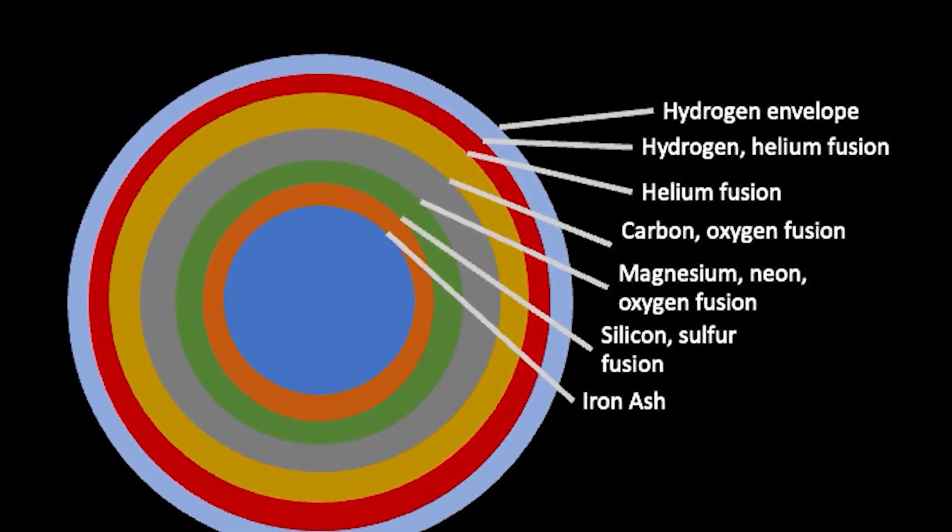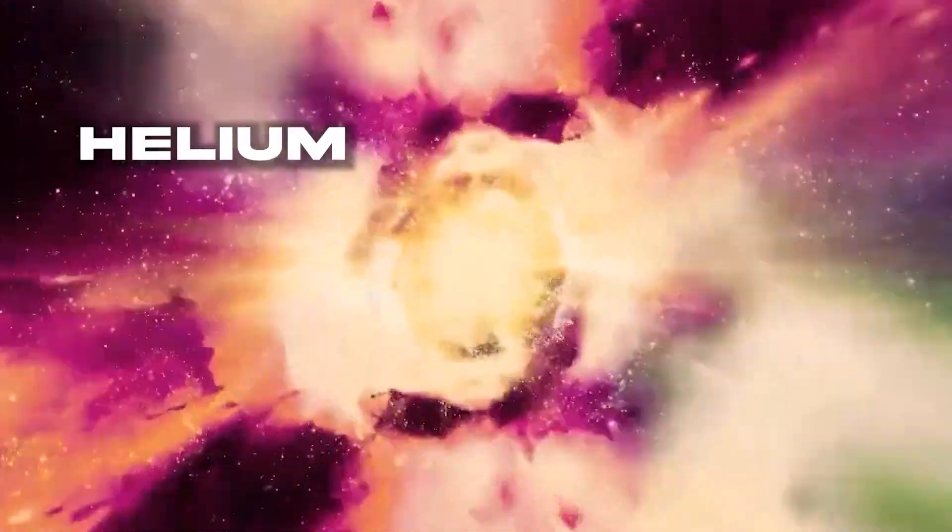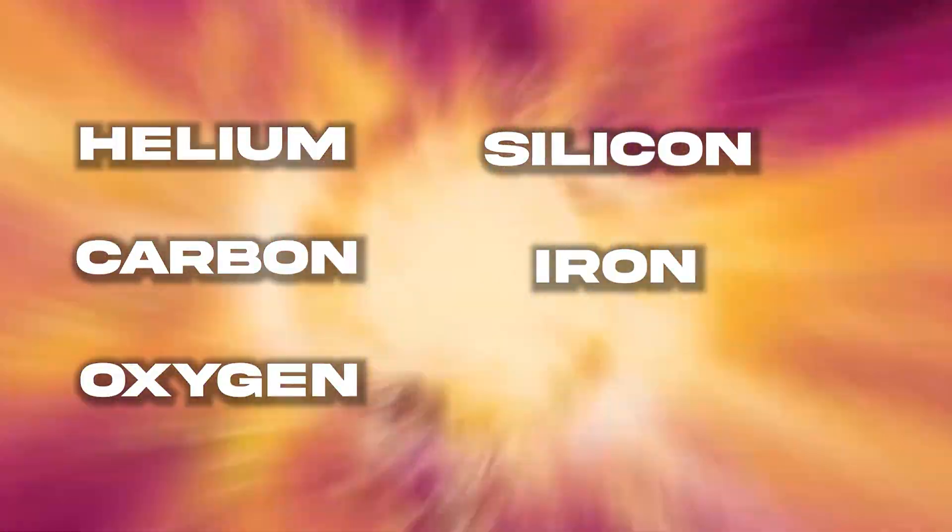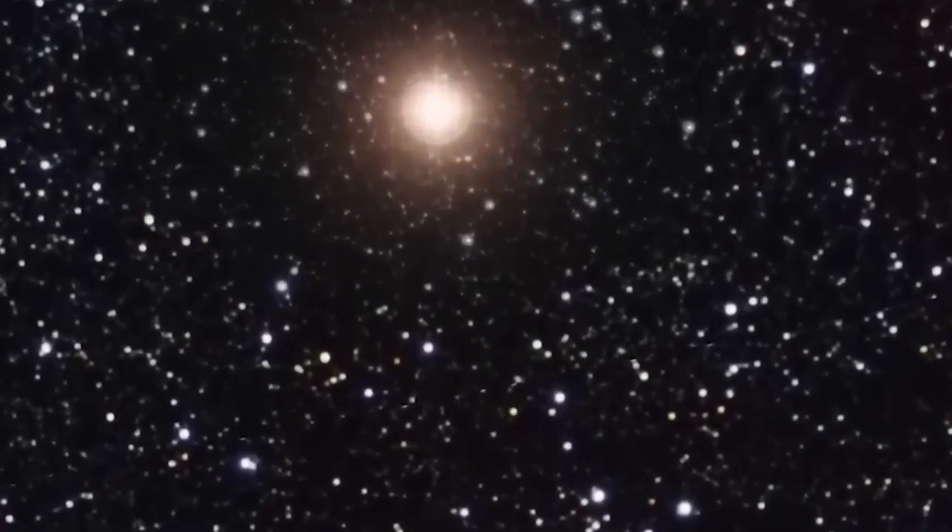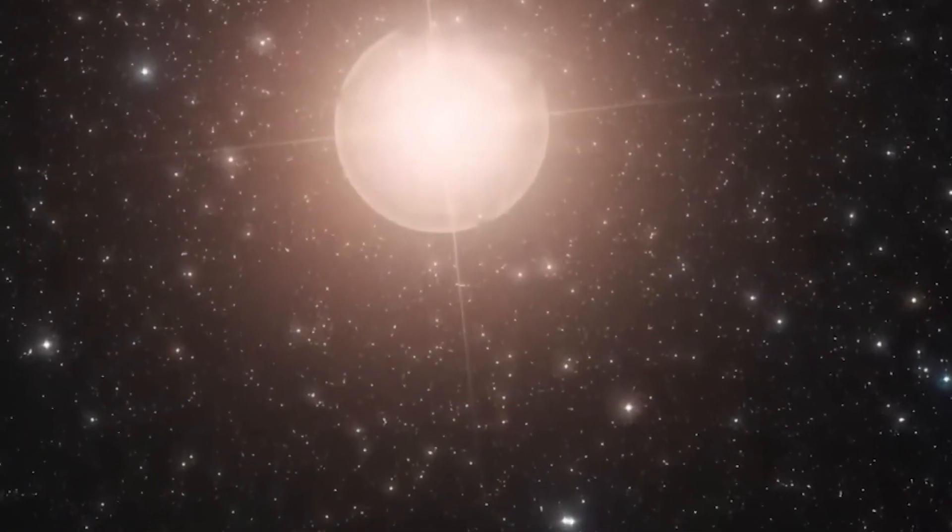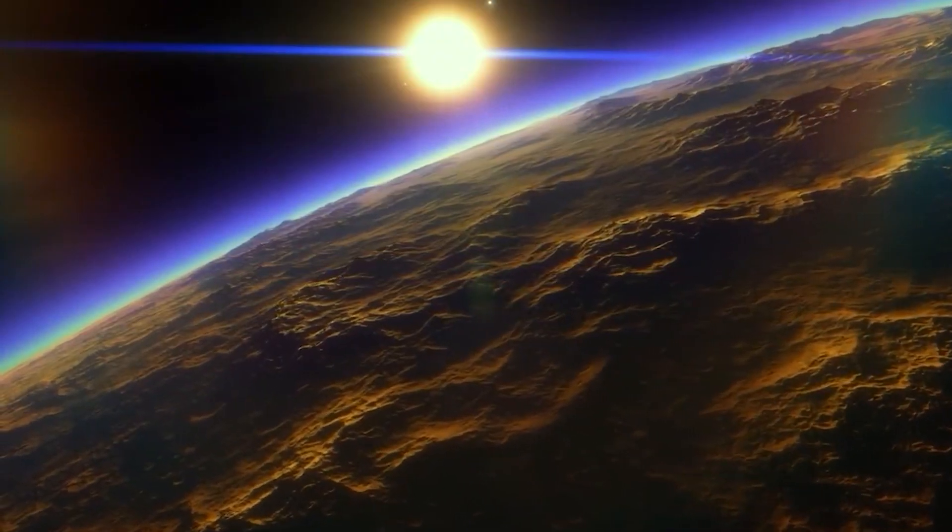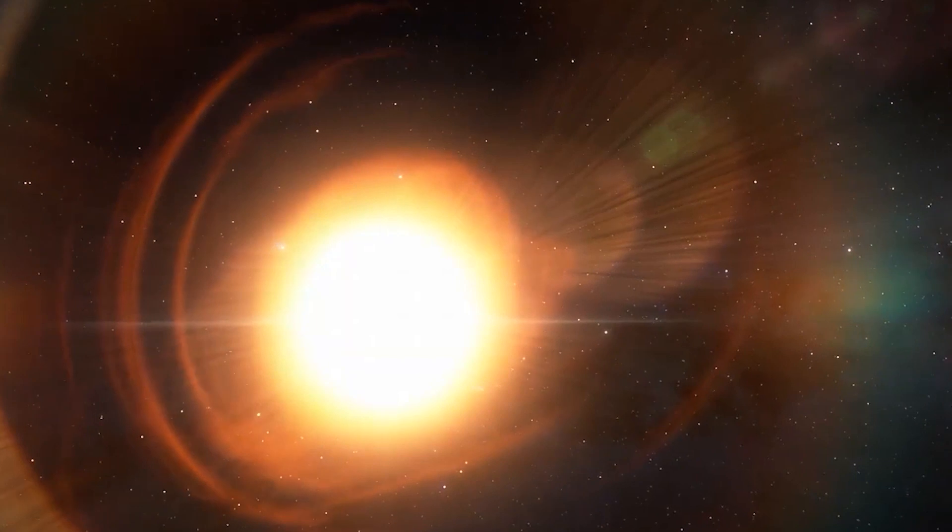Before Betelgeuse can unleash its supernova might, there is much groundwork to be laid. As a red giant star, it embarks on the sequence of fusion process involving various elements such as helium, carbon, oxygen, silicon and finally iron. The journey begins as the star fuses helium into carbon within its core, a process spanning thousands of years. Gradually, it progresses to fuse carbon and helium, giving rise to oxygen, repeating the cycle and forging heavier elements like iron. Eventually, as fusion reactions falter, the star succumbs to its gravitational force, collapsing under its immense weight, triggering a cataclysmic explosion of unparalleled proportions that can outshine entire galaxies.